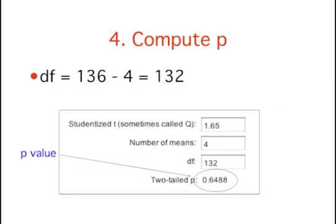Finally, compute p for each comparison using the studentized range calculator. You plug in Q, the number of means, and your degrees of freedom. The degrees of freedom is equal to the total number of observations minus the number of means. So, for this experiment, that's 136 minus 4, which equals 132.